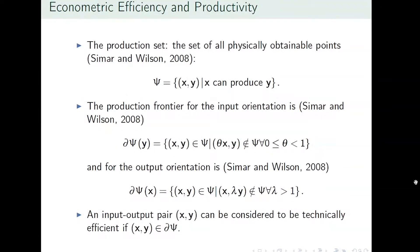Some math — I'll keep it light today, it's a Friday. We need to describe the production set: it's a set of all feasible combinations of inputs x and outputs y. It's saying that if I use x inputs, I can feasibly obtain y outputs — it's within the realms of possibility to achieve that amount of output. Once we've defined our set of physically obtainable points, we need to find the frontier of that set.